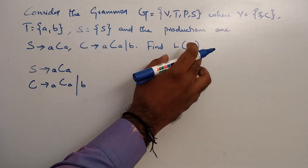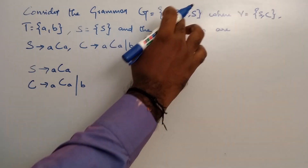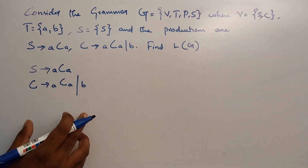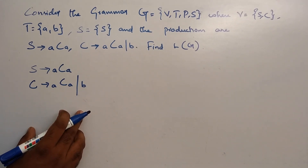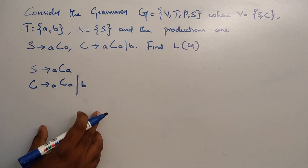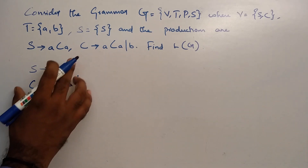Find L(G) — the language belonging to the given grammar. To do this, we write the strings that can be derived from the given grammar, starting with simple strings.